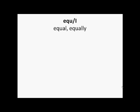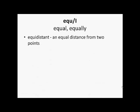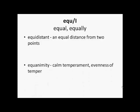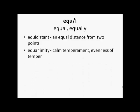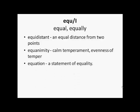'Equ' means equal or equally. So equidistant means an equal distance from two points. Equanimity is a calm temperament or evenness of temper. And equation is a statement of equality.